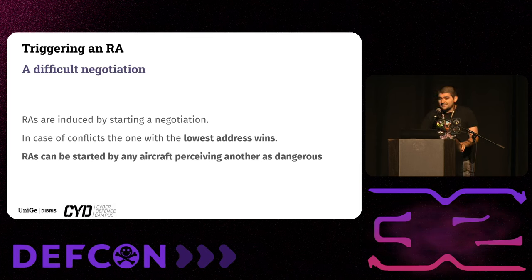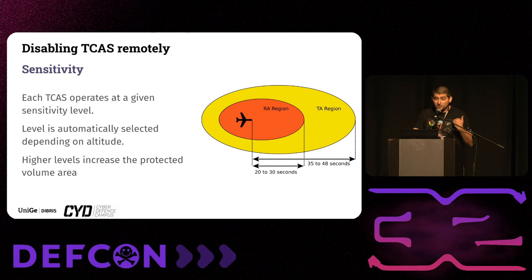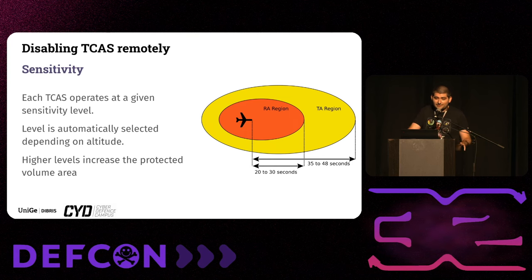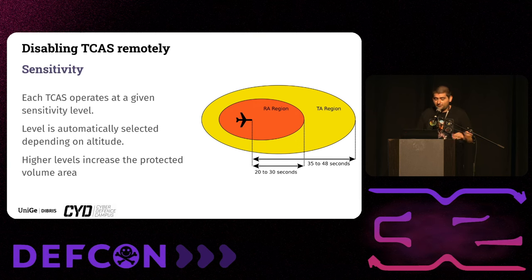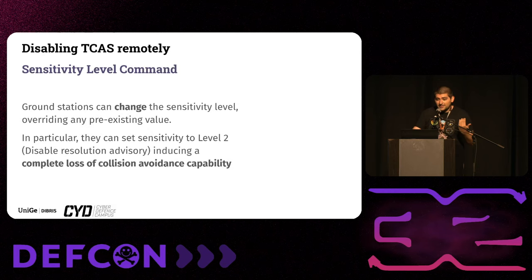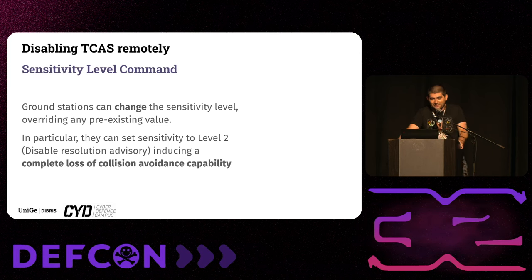The third attack involves spoofing a ground station. TCAS selects a sensitivity level — how far ahead in time it will look for threats — which increases with altitude. In places like Las Vegas with runways close together, TCAS might falsely detect threats. To handle this, the standard allows ground stations to tell aircraft to reduce their sensitivity level. The problem is you can send this command to any aircraft in the air to effectively disable their TCAS with no authentication.